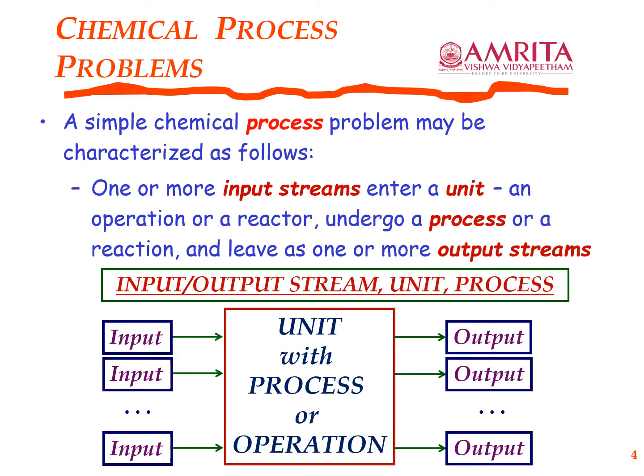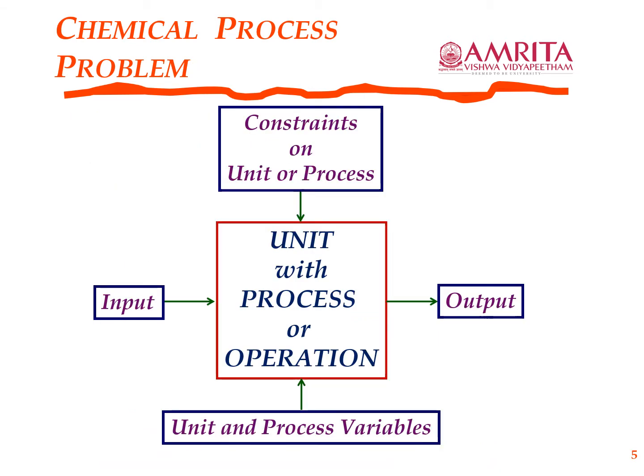A simple chemical process problem may be characterized as: you have a unit where there is a process or an operation, meaning with a reaction or without a reaction. It takes place, there are a number of input streams entering the unit and a number of output streams exiting the unit. This basic block diagram captures how modeling of a chemical process or chemical unit takes place. You have processes or operations taking place in a unit, there are inputs, there are outputs, there are unit and process variables, and there are constraints. The constraints are the equations or inequalities that relate the output, input, and the unit process variables, and those constraints together form the mathematical model.